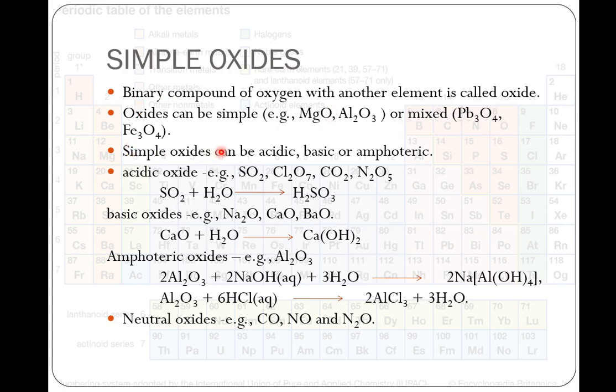The simple oxides may be acidic, basic or amphoteric. If an oxide forms acidic solution on reaction with water, then it is termed as acidic oxide. For example, sulfur dioxide with water gives us sulfurous acid. Basic oxides on reaction with water give us alkaline solution, like calcium oxide with water gives us calcium hydroxide.